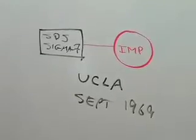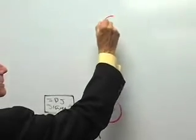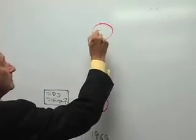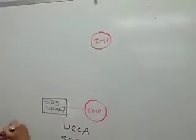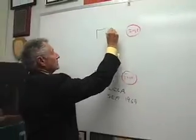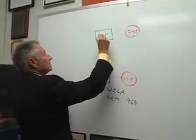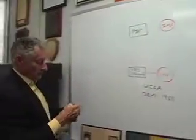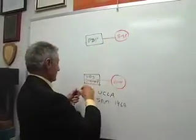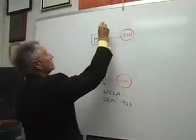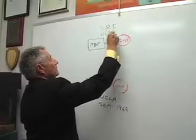A month later, up at SRI — Stanford Research Institute — another IMP arrived in October. And shortly thereafter, they connected their host computer, which was a PDP machine — a Program Data Processor machine, a Digital Equipment machine — to their IMP. So this is Stanford Research Institute, SRI, and the period is October 1969.